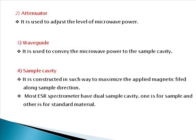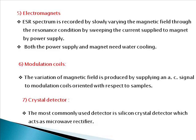The Q-factor is defined as energy stored in the cavity divided by energy lost. The next component is the electromagnets — two electromagnets are used: a North Pole and a South Pole. The ESR spectrum is recorded by slowly varying the magnetic field through the resonance condition by sweeping the current supply to the magnets via a power supply. Since alternating current generates heat, both the power supply and the magnets require a water-cooling apparatus.